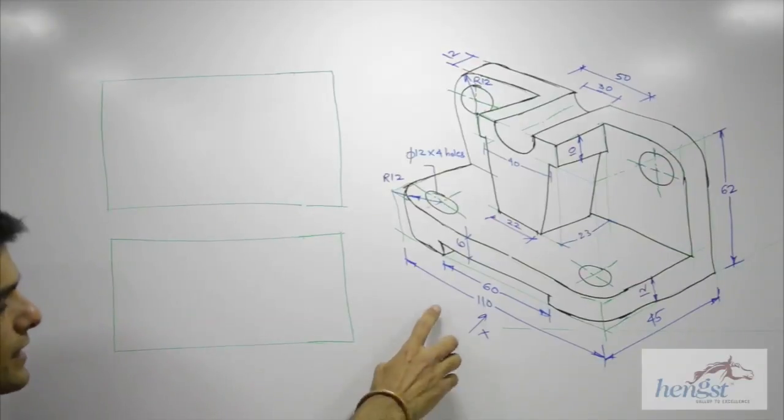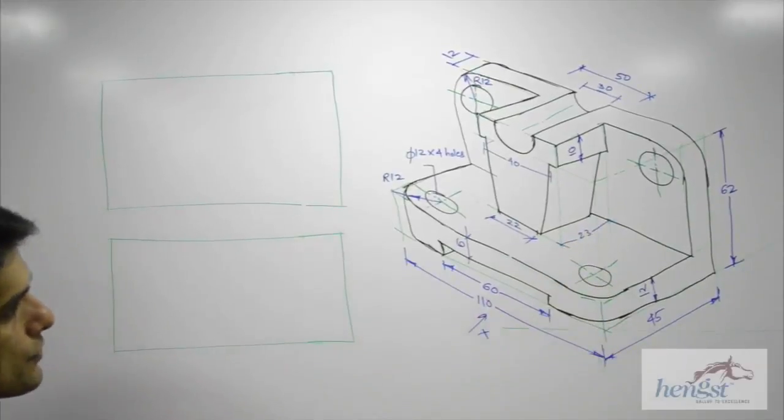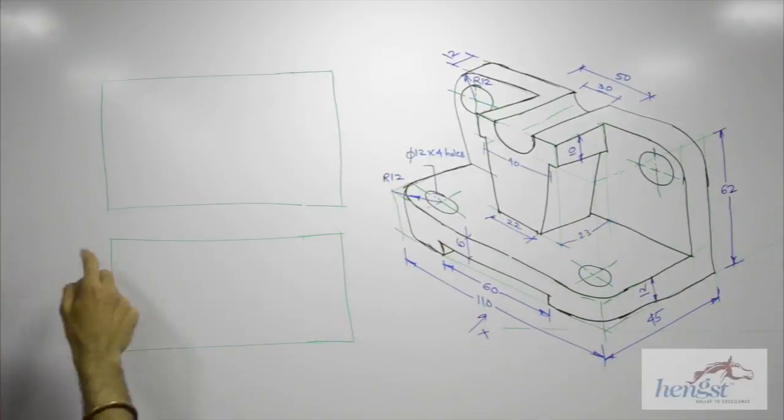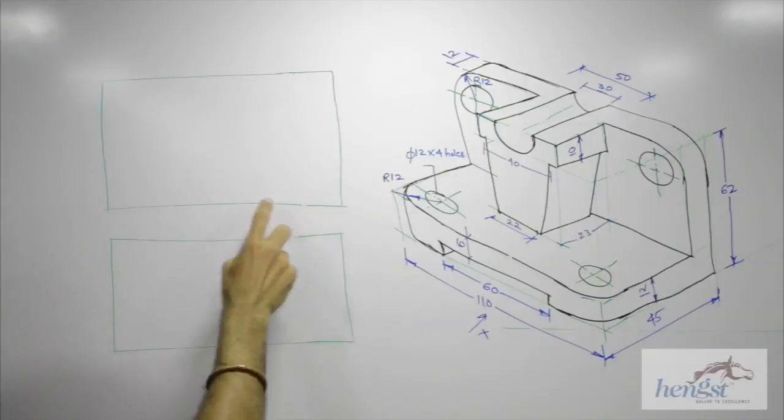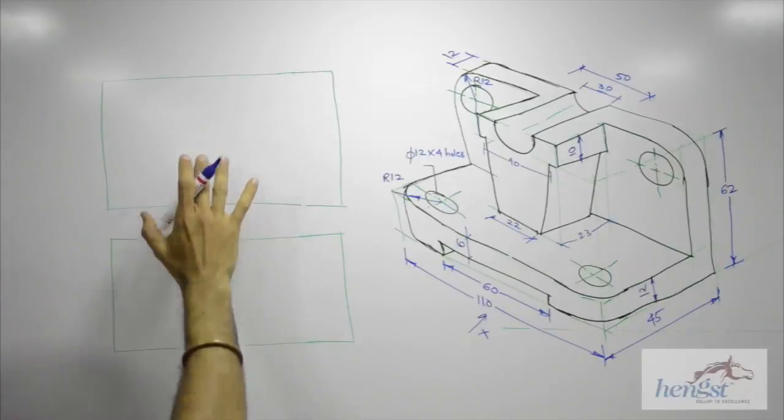In this problem we have a length 110, height 62, and width 45. We need to draw front view and top view. So first we will draw length 110, height 62, and width 45. After drawing the layout for front view and top view, we will start with front view.